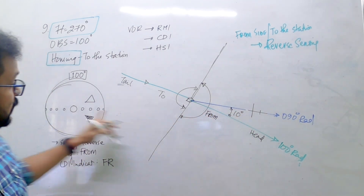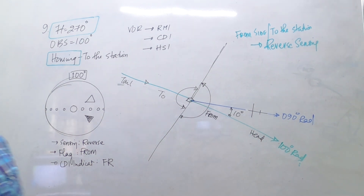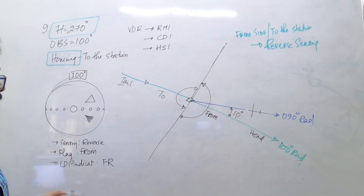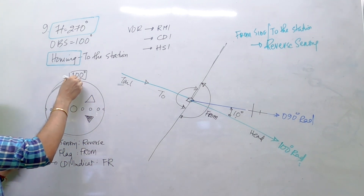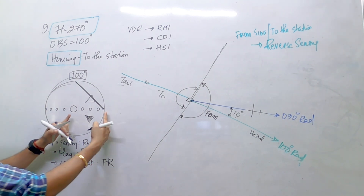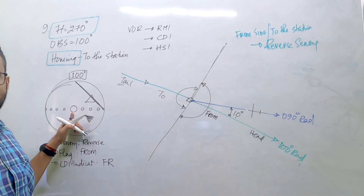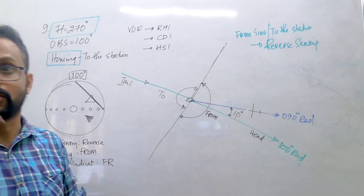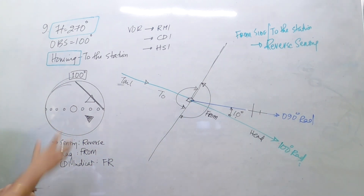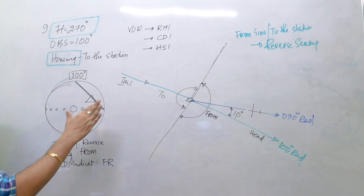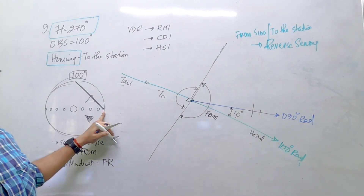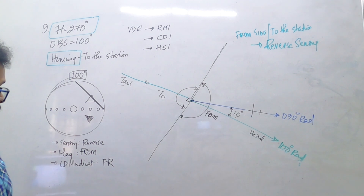The CDI needle will be at full-scale deflection to the right. The full-scale deflection is 10 degrees and you are off by 10 degrees, so the needle is at five dots — maximum. In the 5-dot system, each dot represents 2 degrees. The center counts as the edge of the first dot, so at 10 degrees the needle is pinned at 5 dots. The CDI shows five-dot fly right. The corrective action is to fly left.